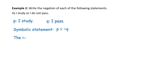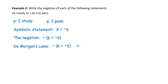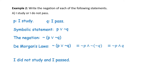What we want is the negation, which would be the negation of P or not Q. DeMorgan's Laws tells us that equals not P and not not Q. Let's clean that up — that would be not P and Q, because not not Q takes us back to Q. Now in words: squiggly P is 'I do not study,' so the negation is 'I do not study and I passed.'